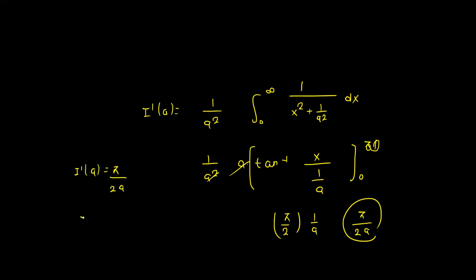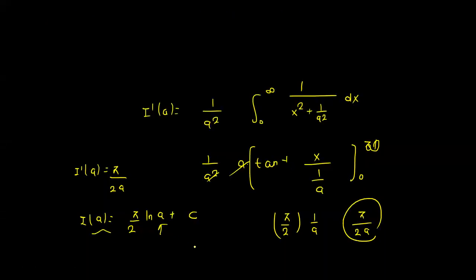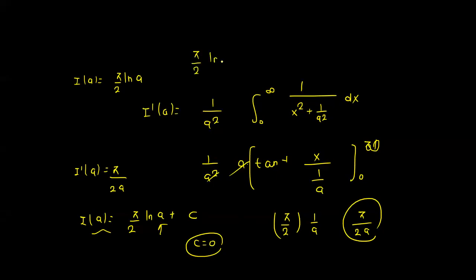Now we integrate with respect to a. The integral of 1/a is ln(a), plus a constant. To find the constant, we look at I(1): since tan inverse of ax and tan inverse of x cancel when a equals 1, I(1) equals 0. Putting a equals 1 gives the constant as 0. So I(a) equals π/2 times ln(a).